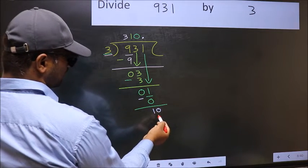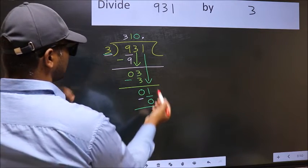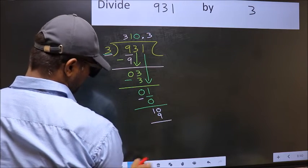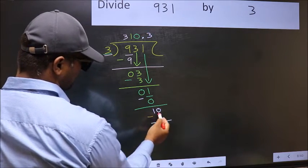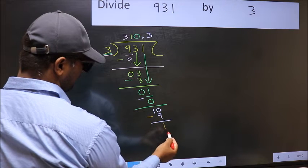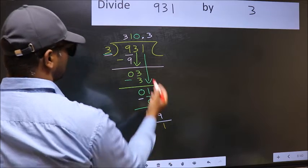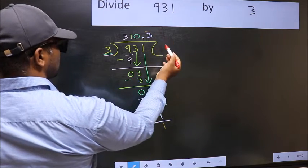So, 10. A number close to 10 in the 3 table is 3 times 3 is 9. Now you should subtract. 10 minus 9, 1. We got 1 again. That means we get a bar on this number.